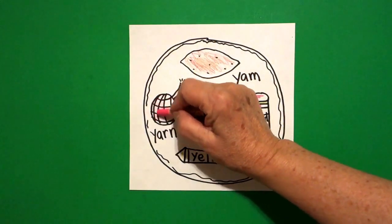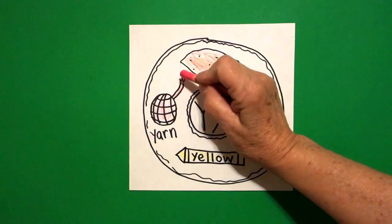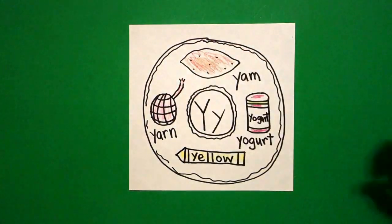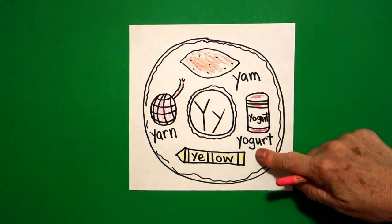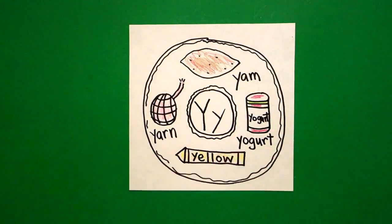And I'm going to make my ball of yarn, yarn, pink. Yam, yogurt, yellow, yarn.